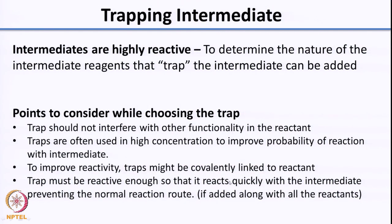There are certain points that one needs to keep in mind when designing traps for a particular intermediate. The trap should not interfere with other functionality in the reactant — it should just be in the flask and should not interfere in the reaction. It should only react with the intermediate once it is formed. A lot of times, to improve reactivity, traps are covalently linked to the reactant or a high concentration of the trap is used. The trap must also be reactive enough to grab the intermediate.